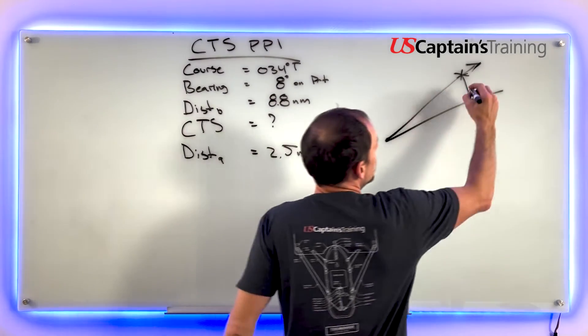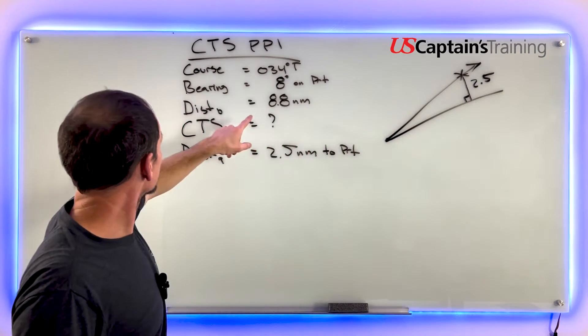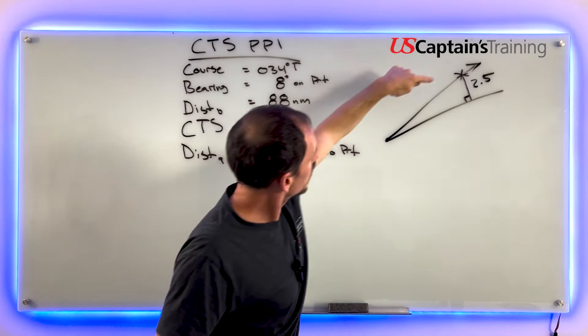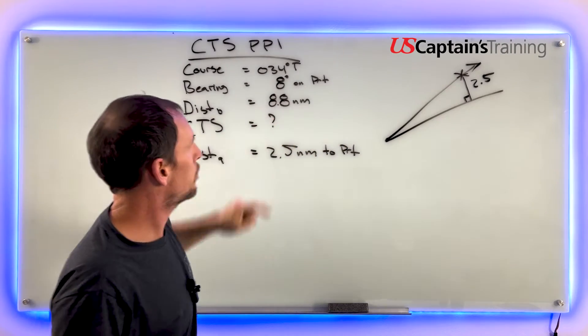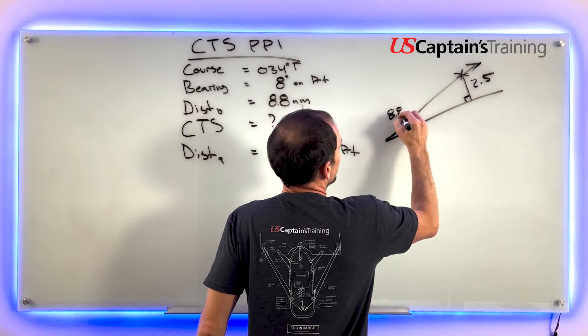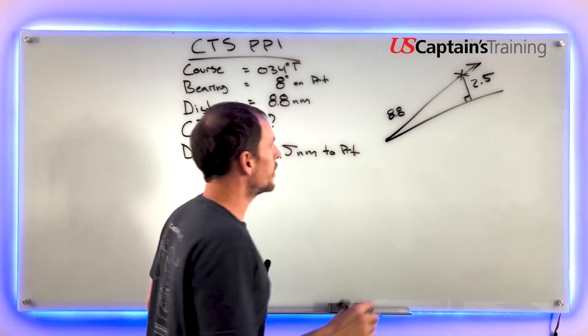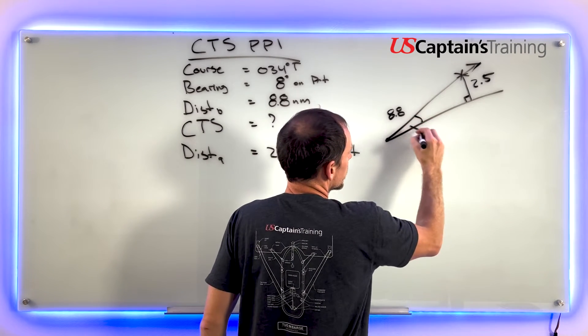We're given two distances - this distance abeam is 2.5, and the distance to the bearing is 8.8. Now the last piece of information we need is this angle here.